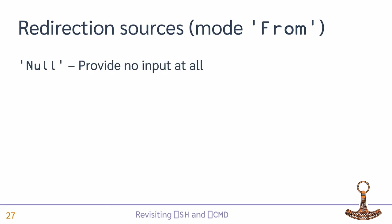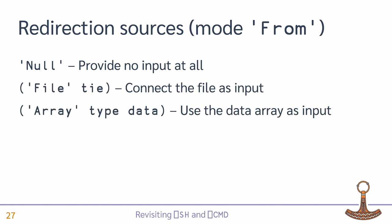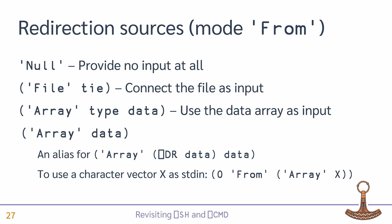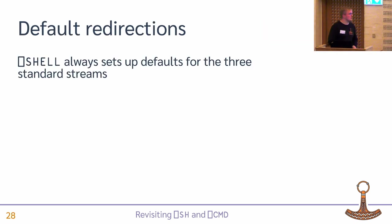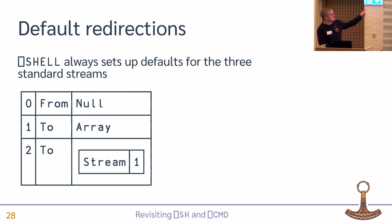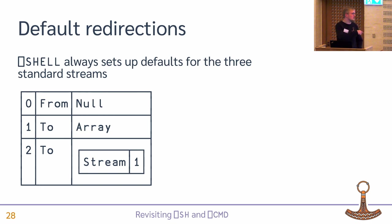We also have a couple of redirection sources. Input can come from nowhere at all — which is the default, meaning no input is attached. Input can come from a file, or input can come from an array. So if I want to use a character vector as standard input, I just say 0 (which is standard input), 'from', and then 'array X', where X is my character vector.